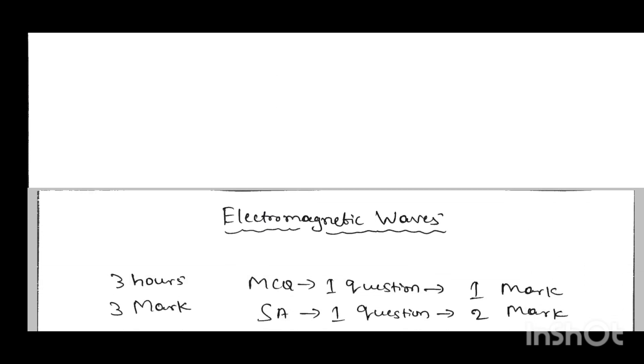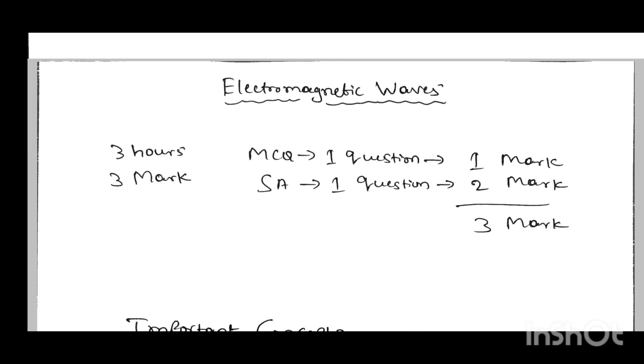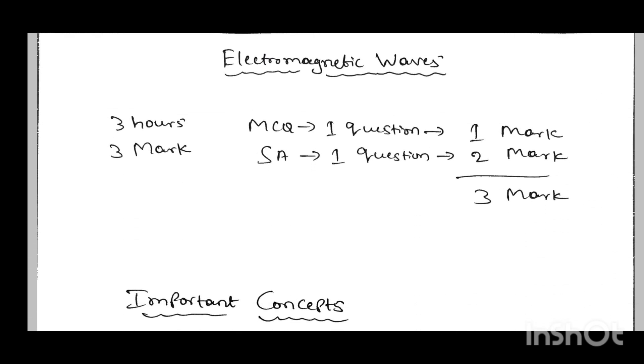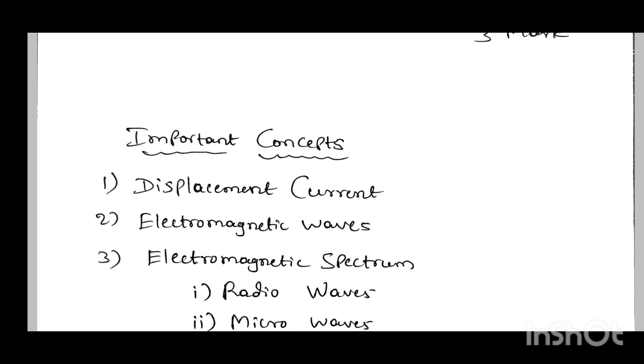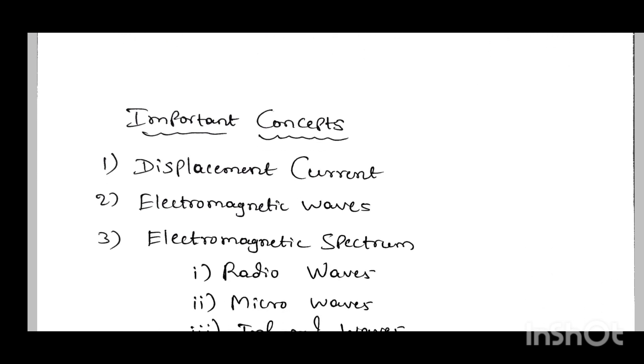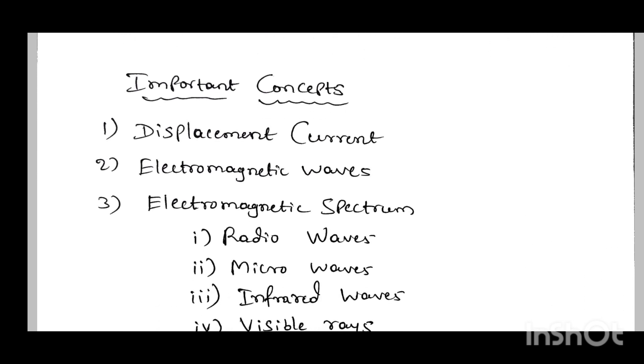Another chapter: Electromagnetic Waves. This is the smallest chapter with 3 hours and 3 marks. You will get one MCQ question carrying 1 mark and one SA type question carrying 2 marks, totally 3 marks. This is a very simple topic where you can easily get all 3 marks.